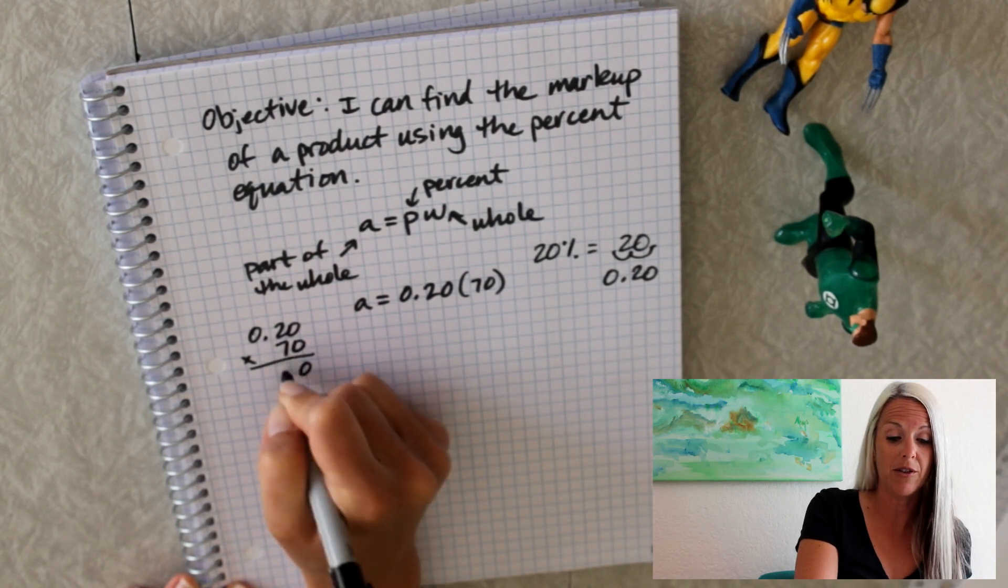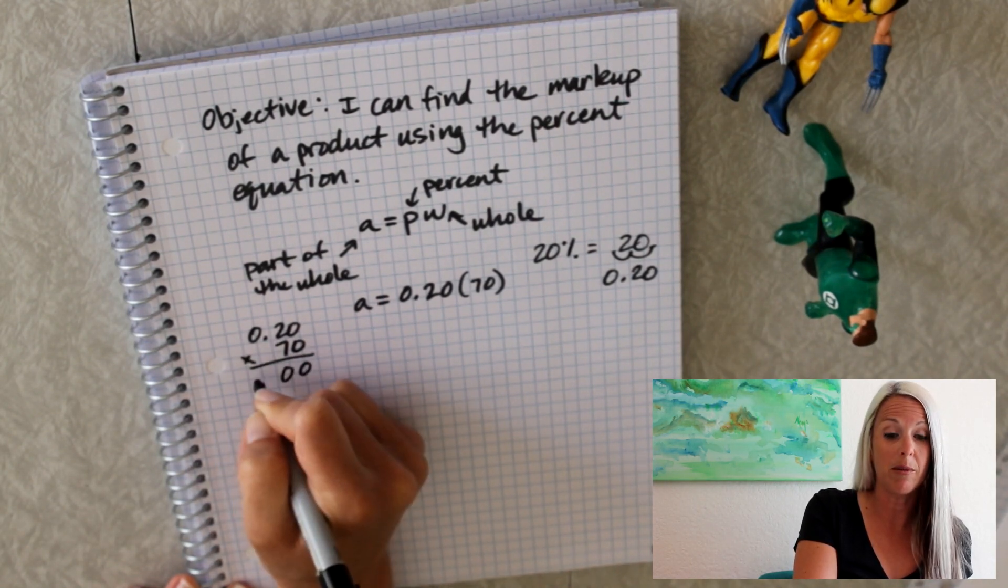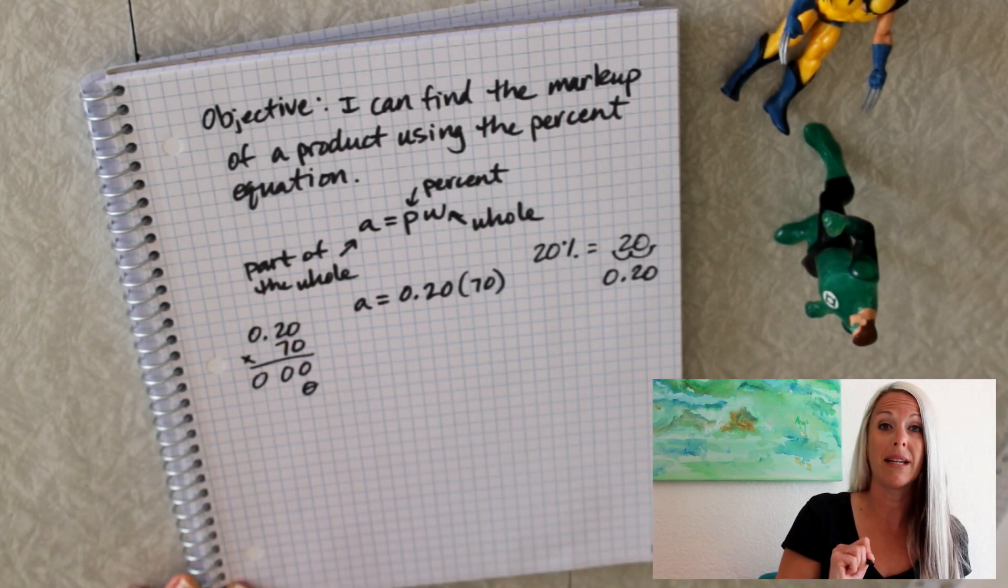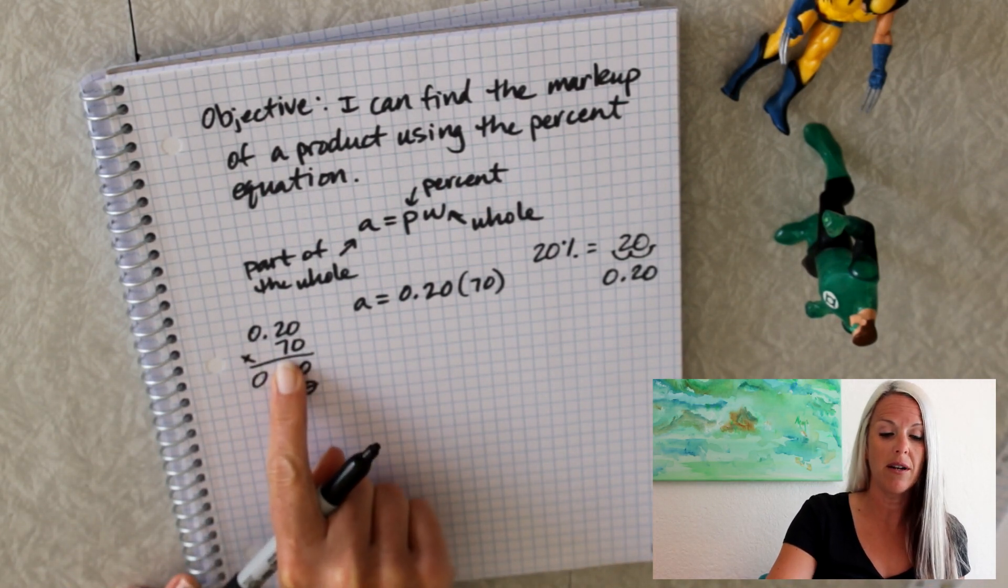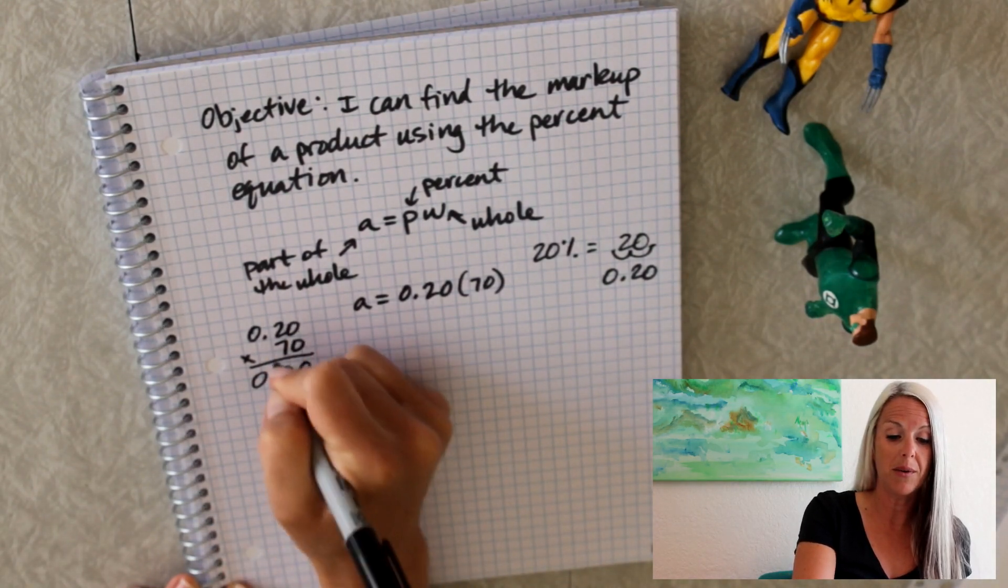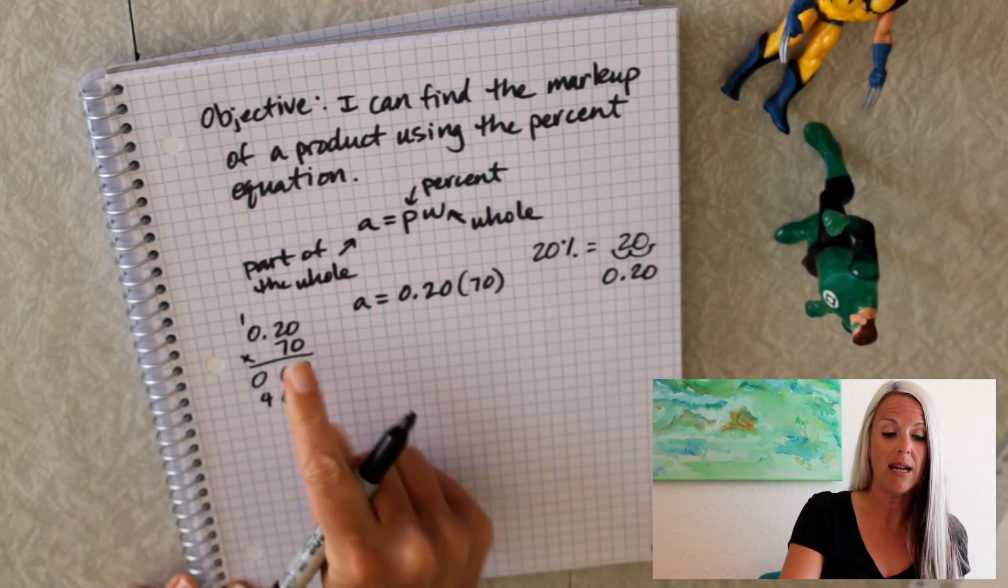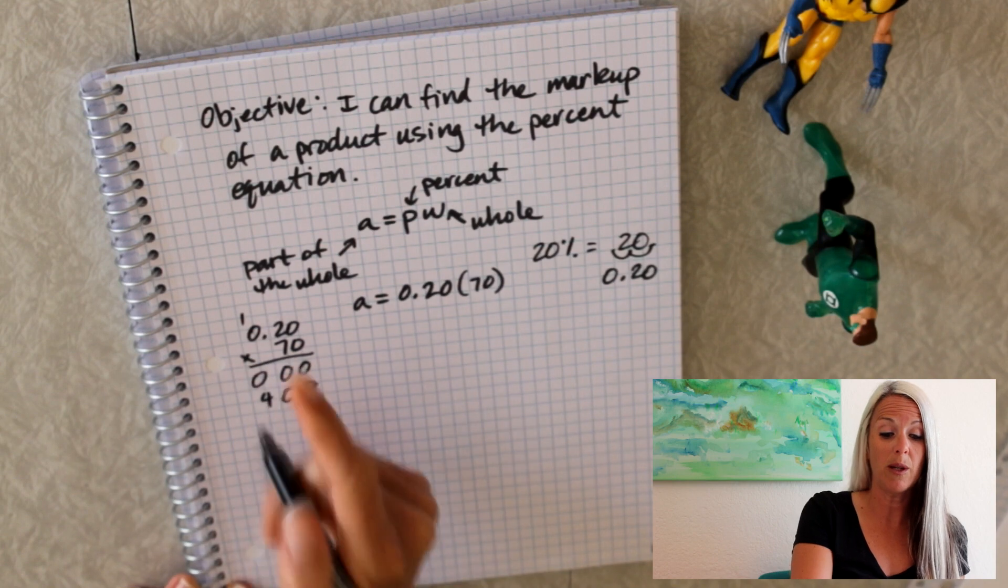So we're going to multiply by 70 here. 0 times 0 is 0. 0 times 2 is 0. 0 times 0 is 0. Placeholder. So now we multiply all three of those numbers by the second digit here. 7 times 0 is 0. 7 times 2 is 14. 7 times 0 is 0. Plus 1 is 1.